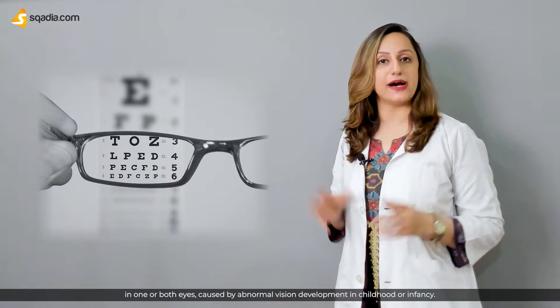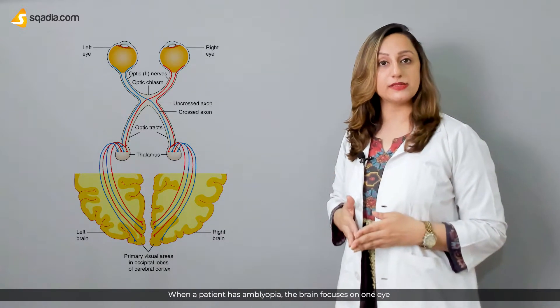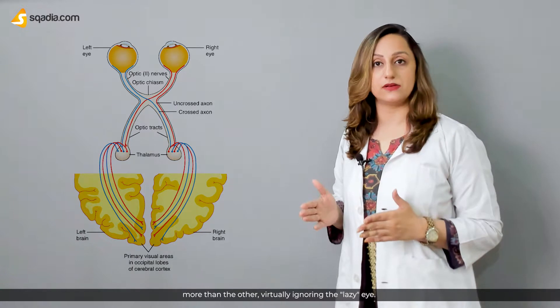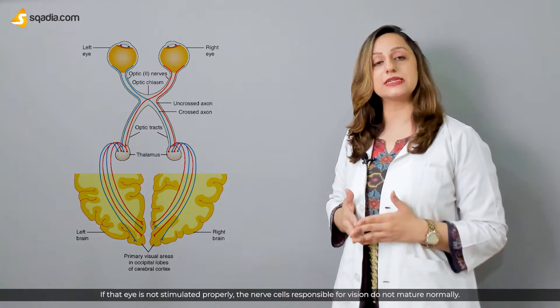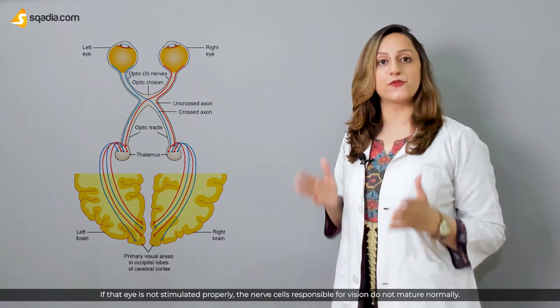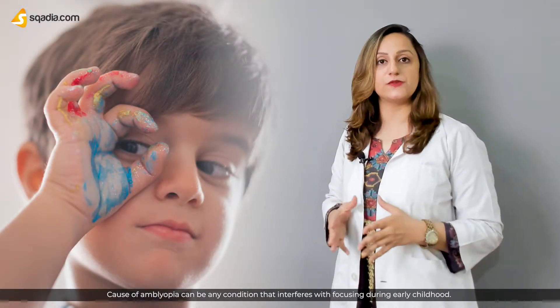Lazy eye, also known as amblyopia, refers to unilateral or bilateral decrease of vision in one or both eyes, caused by abnormal vision development in childhood or infancy. When a patient has amblyopia, the brain focuses on one eye more than the other, virtually ignoring the lazy eye. If that eye is not stimulated properly, the nerve cells responsible for vision do not mature normally.